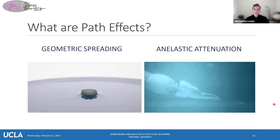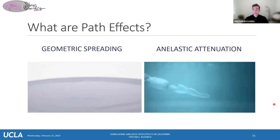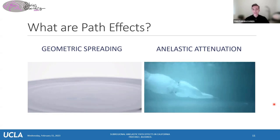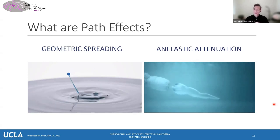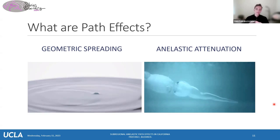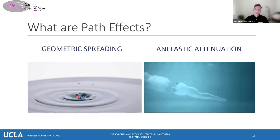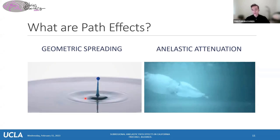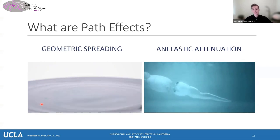The first is geometric spreading, which is related to the energy dissipation as the wavefront travels from a point source — which we can think of as an earthquake — as it radiates outward over an ever-increasing space. Think of Earth as just a body of water with no land, and an earthquake would be like an asteroid hitting it. Right where that asteroid hit the water surface, you have high waves, but as it radiates outward over an ever-increasing area, the height of those waves gets smaller and smaller. That's just energy spread over a larger area.